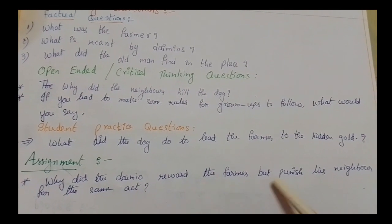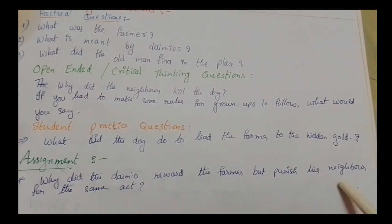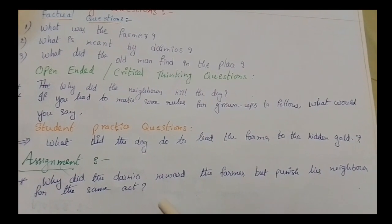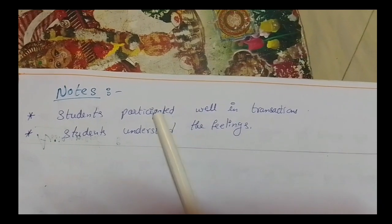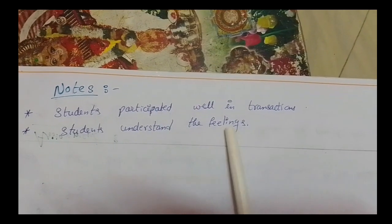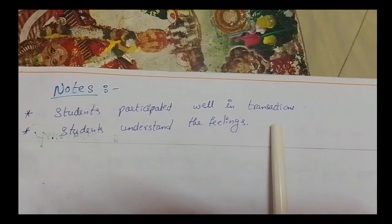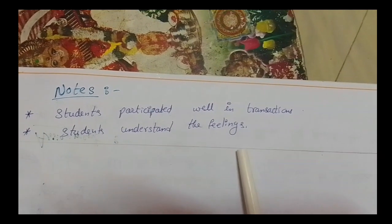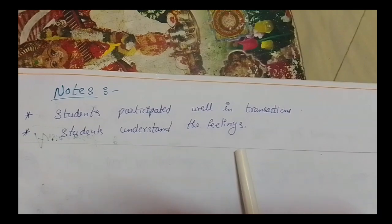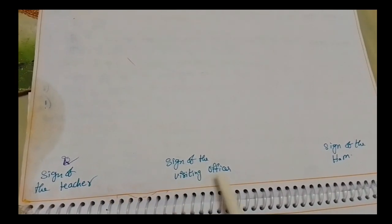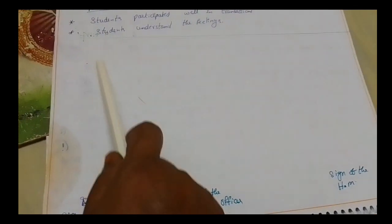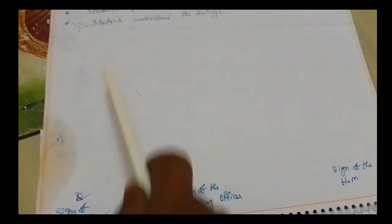Next assignment question: why did the diamond reward the farmer but punish his neighbor for the same act? Finally we write notes: students participated well in transactions, and students understood the feelings.